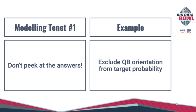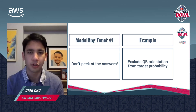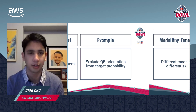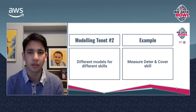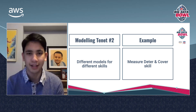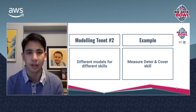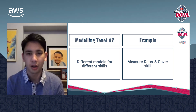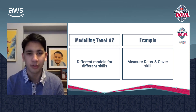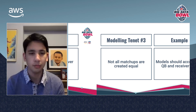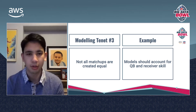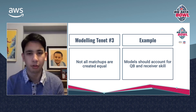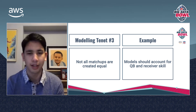A lot of decisions were made throughout our work, and we want to highlight three tenets that guided our decision-making. The first is to not peek at the answers — like Brian Burke and others, we exclude QB orientation from our target probability model at the time of throw, as including it would abstract how we measure the defender's skill in deterring targets. Additionally, we build different models for different skills: deterring targets in excess of expected given matchup separation is one skill, while limiting yards of separation is another. Simple models cannot account for both simultaneously. We credit players for performance in both skills, and we account for quarterback and receiver skill to credit defenders playing against great offensive players.